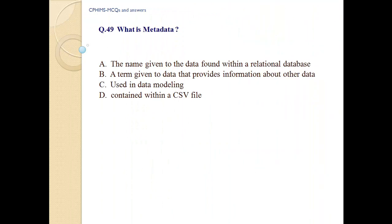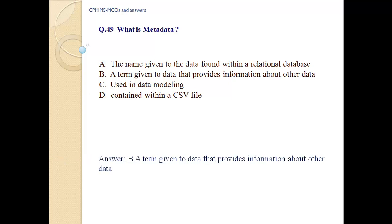Question number 49. What is metadata? a. the name given to data found within a relational database; b. a term given to data that provides information about other data; c. used in data modelling; d. content within a CSV file. Answer: B — a term given to data that provides information about other data.